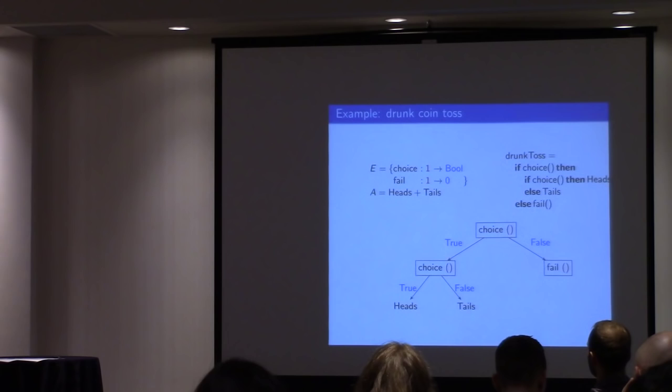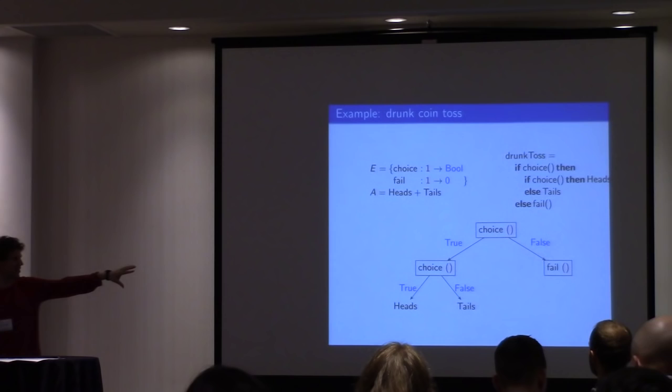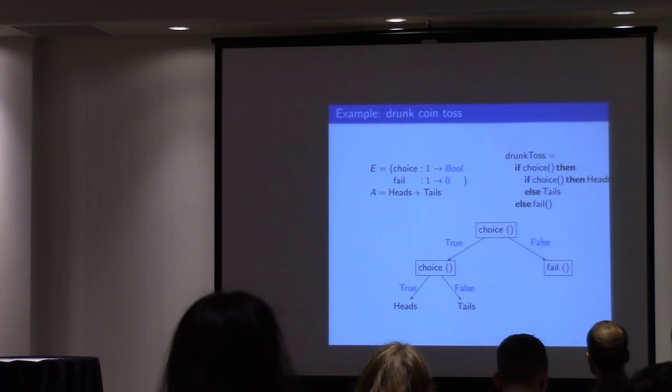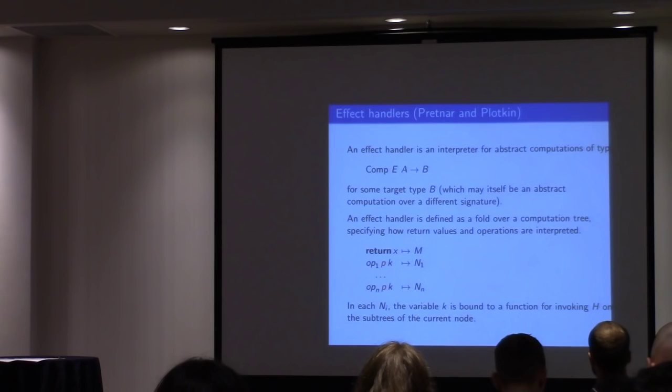The idea with these pictures is that the tree you can view as corresponding roughly to the semantics. The program written up there is the kind of code you'd write. The job of an implementation of these abstract computations is to generate these trees, and then a handler is something that interprets the tree.